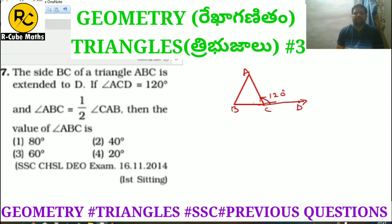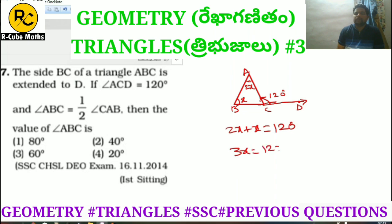Since angle ABC is half of angle CAB, let angle ABC equal x and angle CAB equal 2x. The exterior angle equals the sum of opposite interior angles, so 2x plus x equals 120 degrees. Therefore 3x equals 120 degrees, x equals 40 degrees. So angle ABC equals 40 degrees.